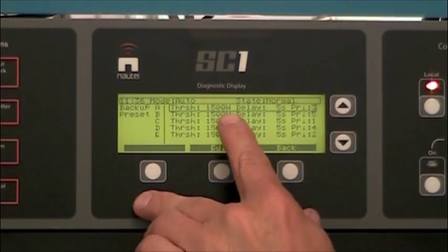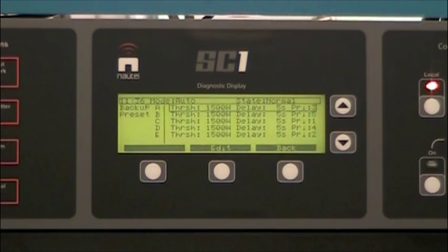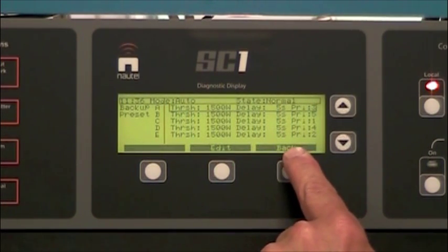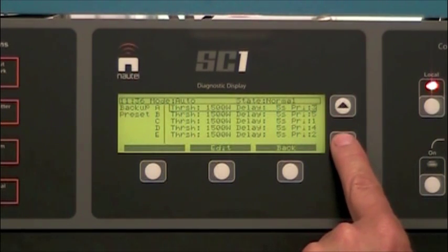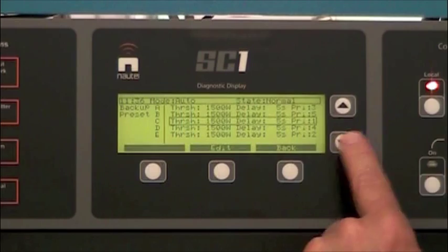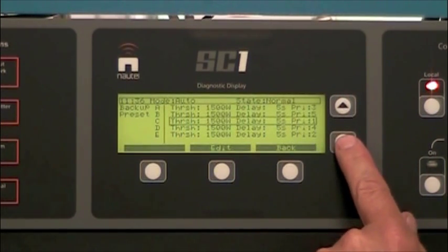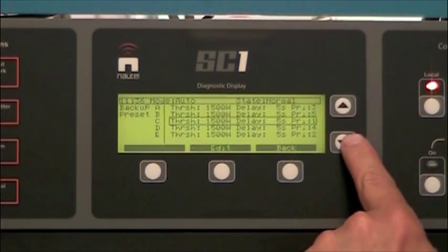We see the threshold of each of the transmitters is set at 1500 watts, a delay of 5 seconds, and the priorities are shown over on this side. We would scroll down to the one we wish to change. If we wish to make E as priority number 1.